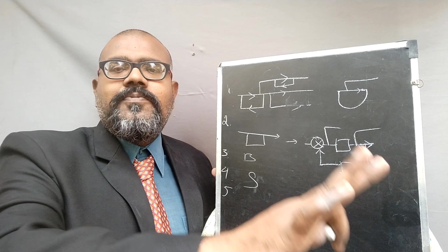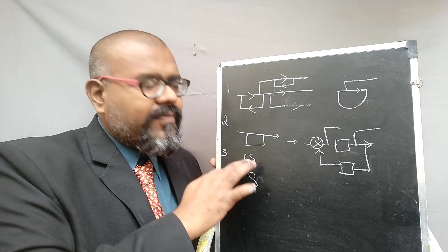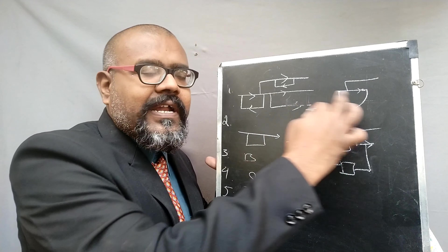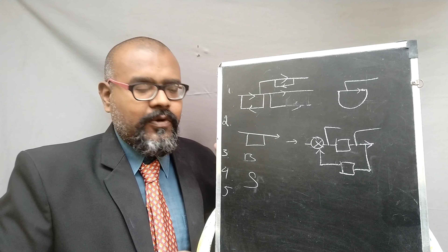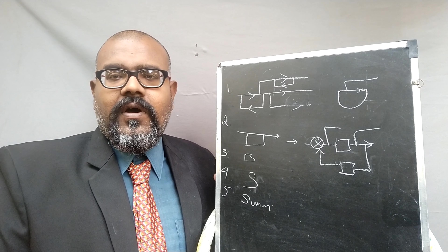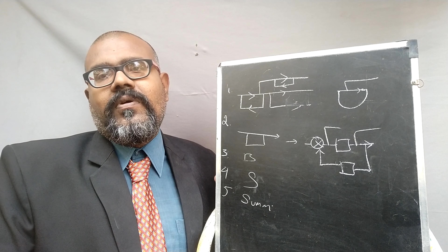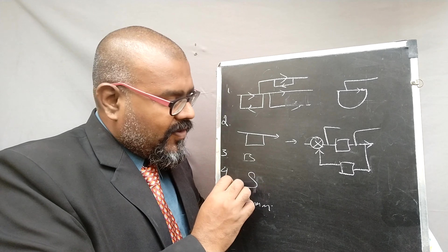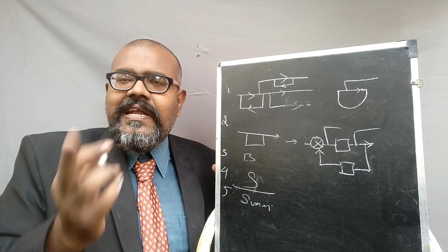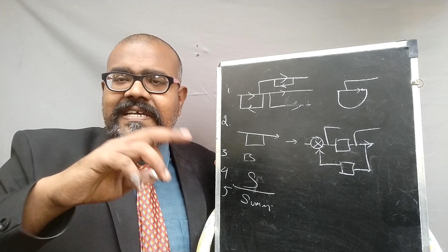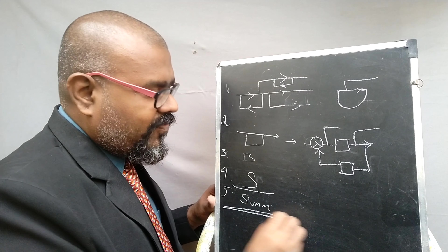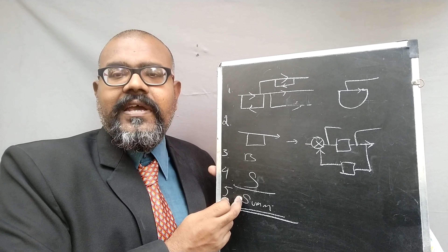Fifth: if there is no branch point to move and no summing point to move — even after moving the branch point or summing point ahead or behind the block we cannot get an individual feedback path — then the next thing you need to do is take all the summing points and try interchanging or splitting the summing point. Most of the time students feel that after moving branch points and summing points no feedback path is obtained. In that case, interchanging the summing point will give you the feedback path.